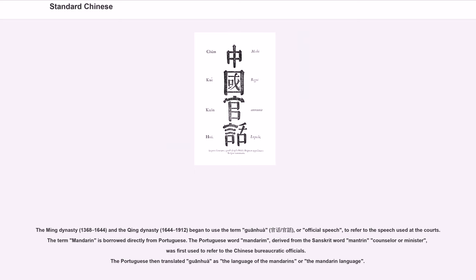The Ming dynasty (1368–1644) and the Qing dynasty (1644–1912) began to use the term guanhua, or official speech, to refer to the speech used at the courts. The term Mandarin is borrowed directly from Portuguese. The Portuguese word mandarin, derived from the Sanskrit word meaning counselor or minister, was first used to refer to Chinese bureaucratic officials. The Portuguese then translated guanhua as the language of the mandarins, or the Mandarin language.